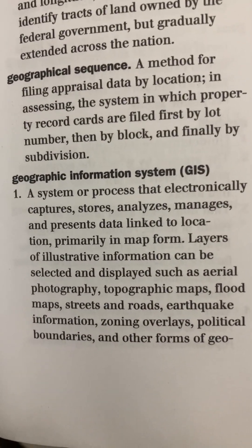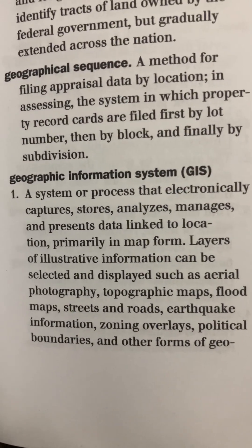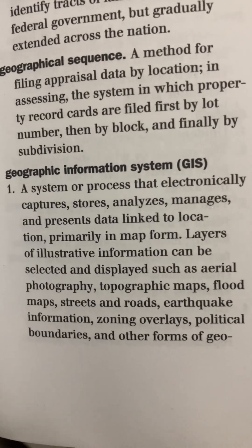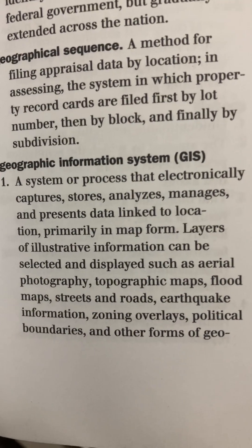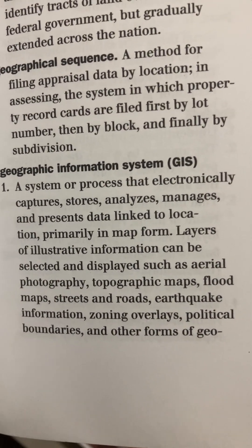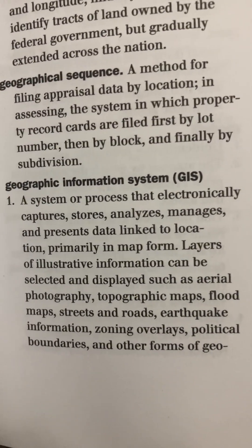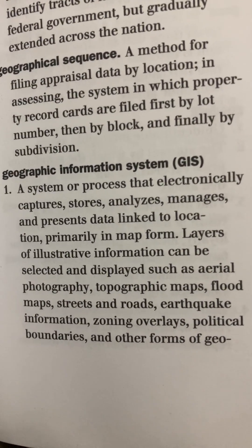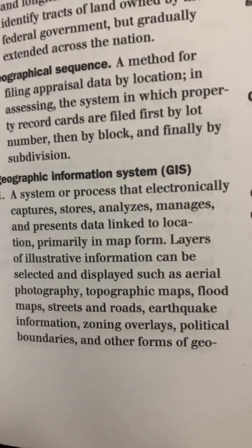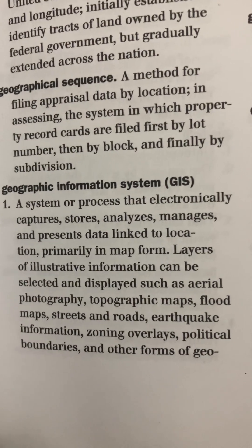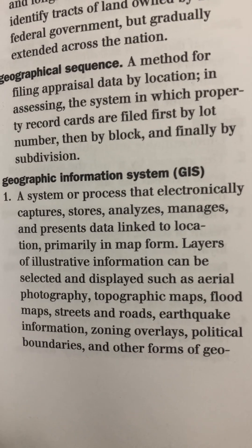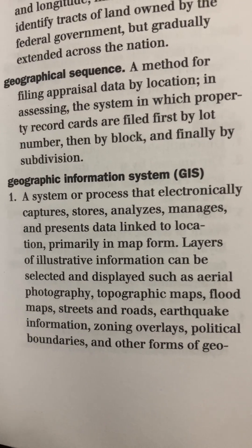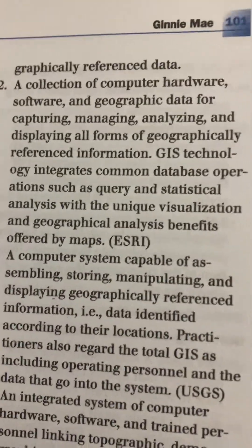Geographic Information System, GIS. Number 1: a system or process that electronically captures, stores, analyzes, manages, and presents data linked to location, primarily in map form. Layers of illustrative information can be selected and displayed, such as aerial photography, topographic maps, flood maps, streets and roads, earthquake information, zoning overlays, political boundaries, and other forms of geographically referenced data.